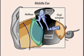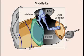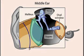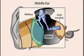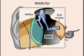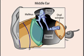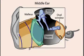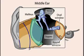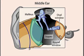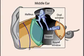Because the entire structure is filled with fluid, movement within the cochlea requires the presence of a movable outlet membrane. This membrane is the round window, which separates the scala tympani from the middle ear.